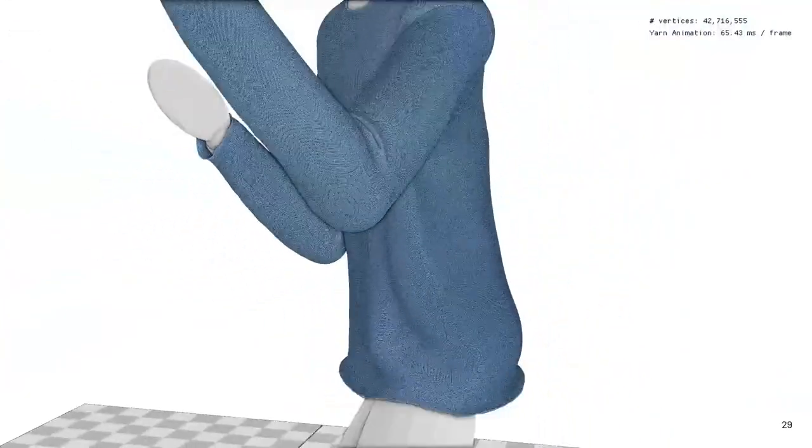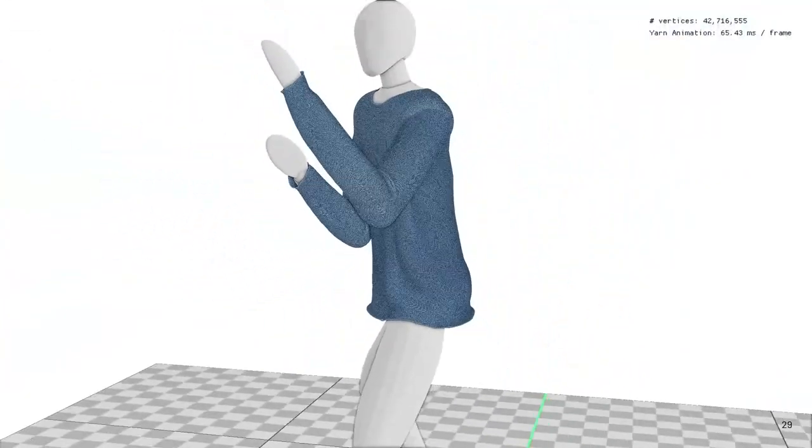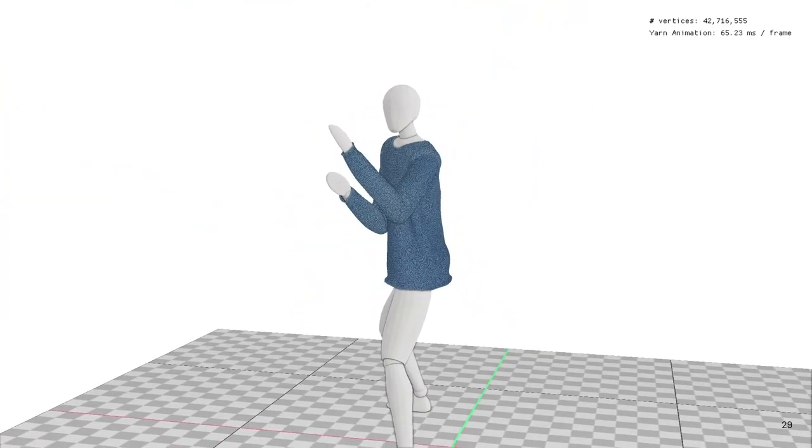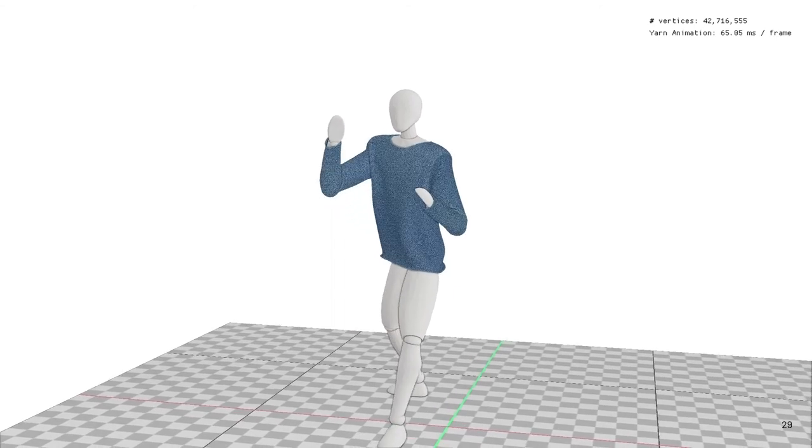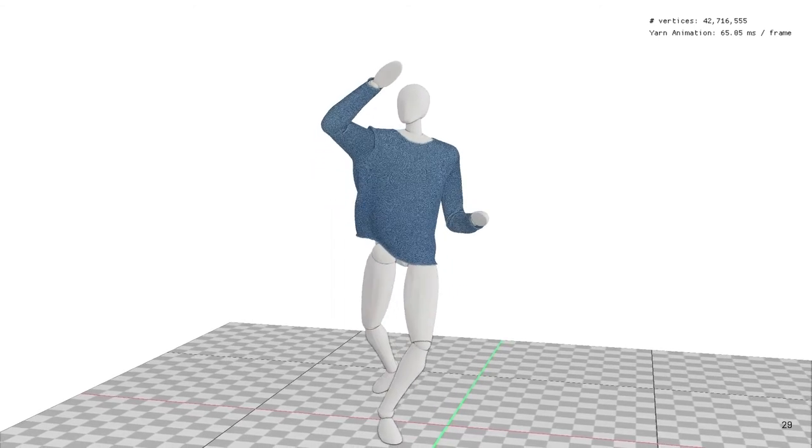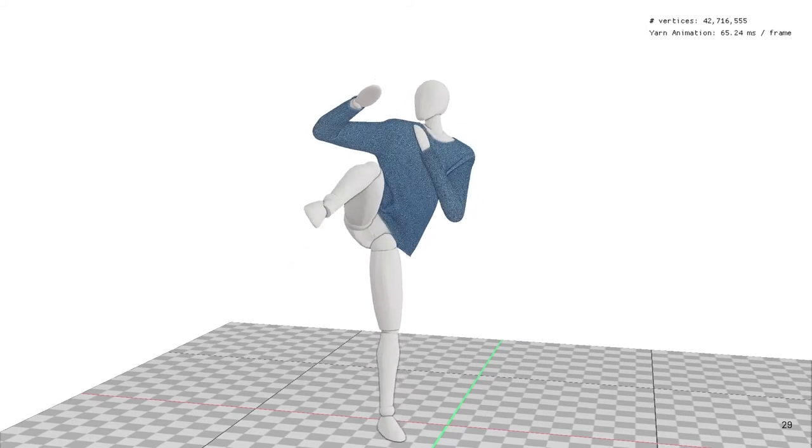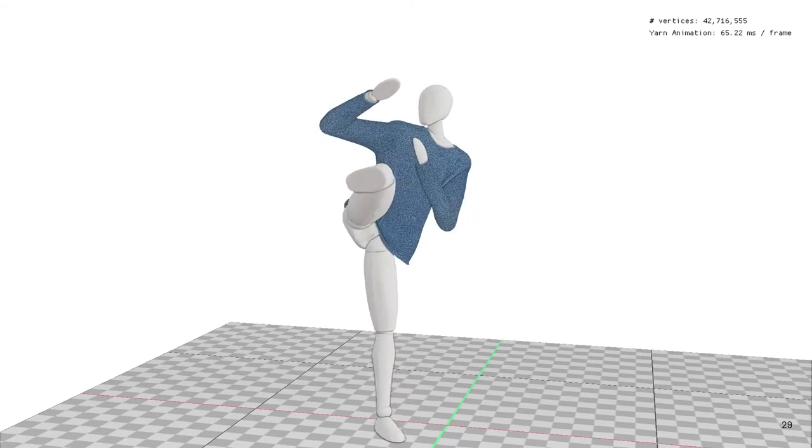So as a stress test, we use a knit pattern with much smaller yarns, resulting in a total of 42 million yarns. Even at this scale, the yarn animation is borderline interactive at 65 milliseconds per frame, around 14 frames per second without rendering, and 4 frames per second with rendering. At such large scales, our naive tessellated yarn rendering actually becomes a bottleneck and suffers from aliasing.